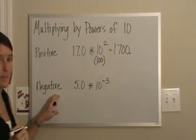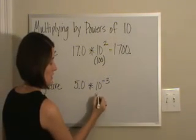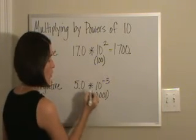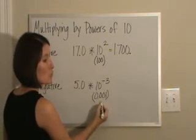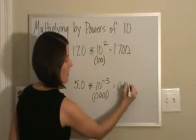In a negative power of 10, I know that 10 to the negative 3 is the same thing as 1 one thousandth. Well, 5 times 1 one thousandth is 5 one thousandth.